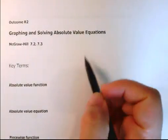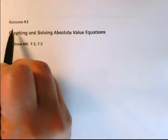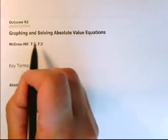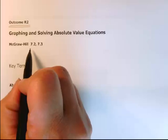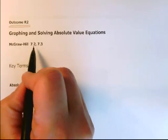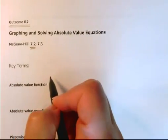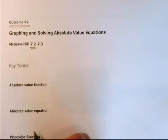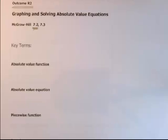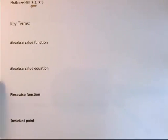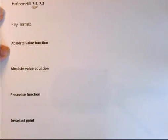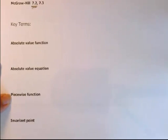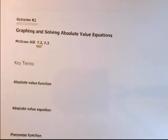In this video we're going to look at outcome R2, specifically section 7.2. Keep your ears open for these key terms: absolute value functions, equations, piecewise function, and invariant point. Let's get graphing.